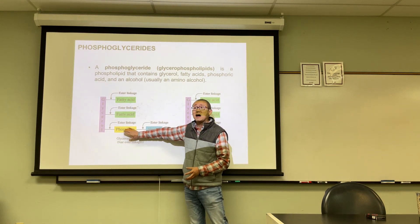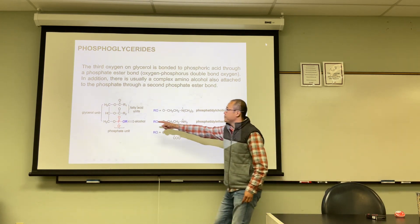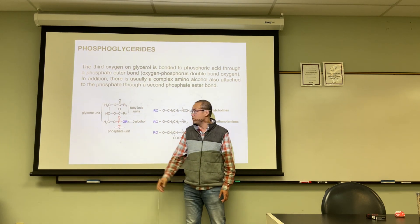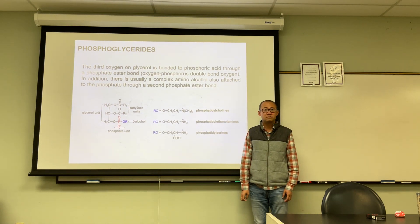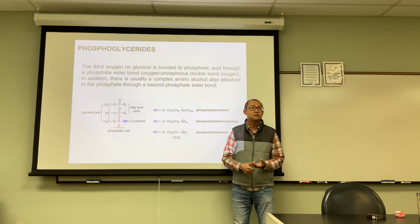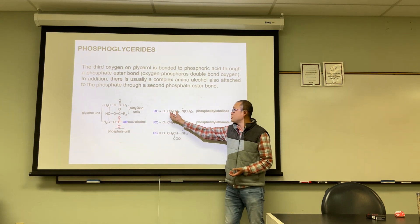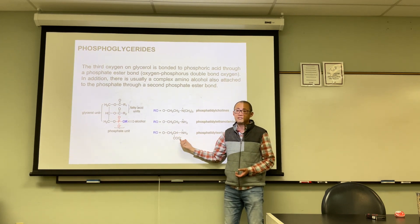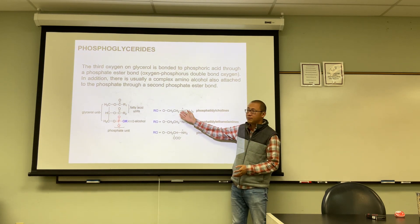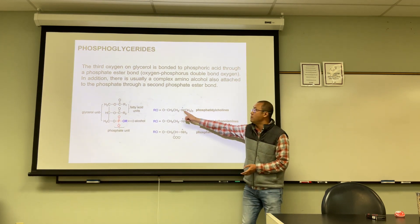The key difference between phosphoglycerides and triglycerides is the phosphate group, which forms a phosphate ester bond with glycerol. There is also a diester on the phosphate with small alcohol molecules. What the three types of small alcohols on phosphoglycerides have in common is they're all ethanolamine-type alcohols — the oxygen bonds to phosphate, and there are two carbons and a nitrogen in the structure.